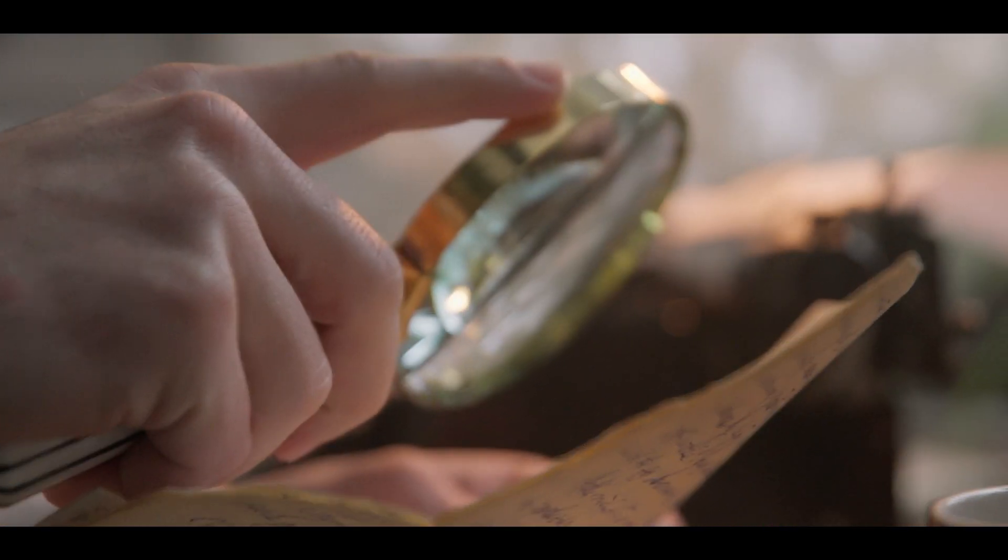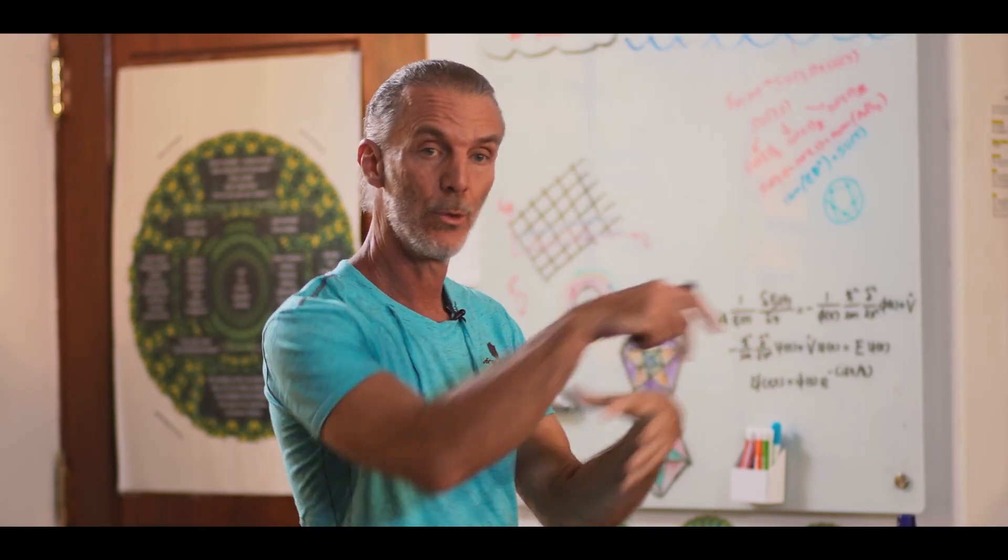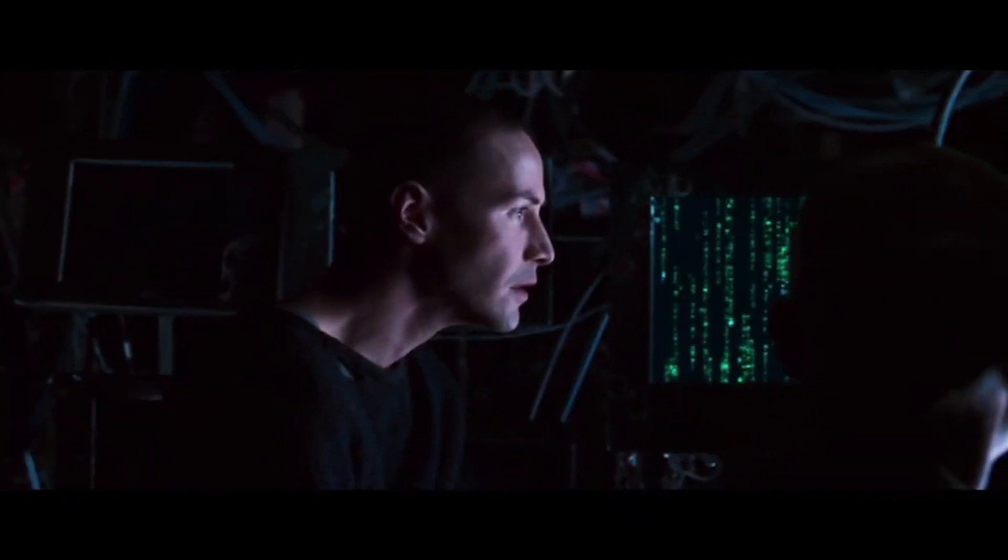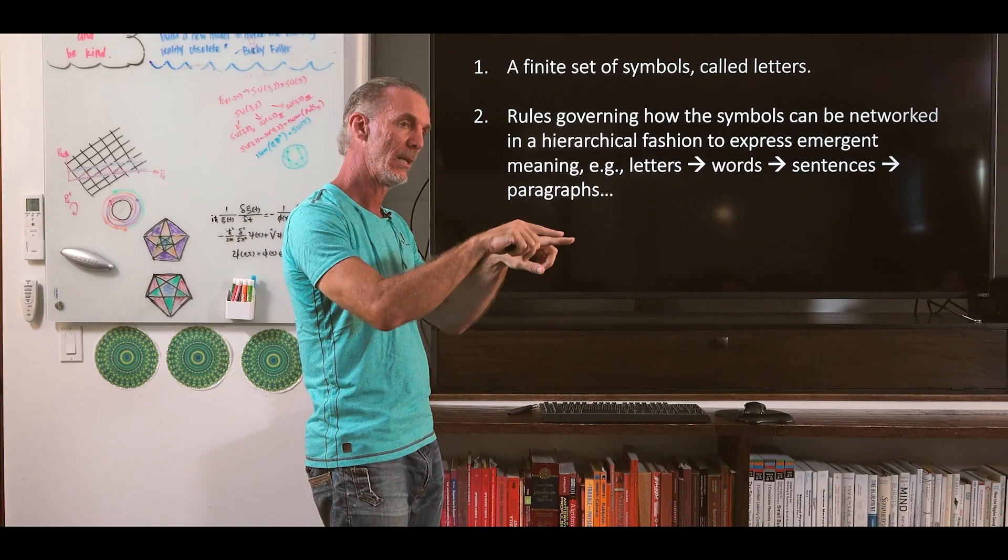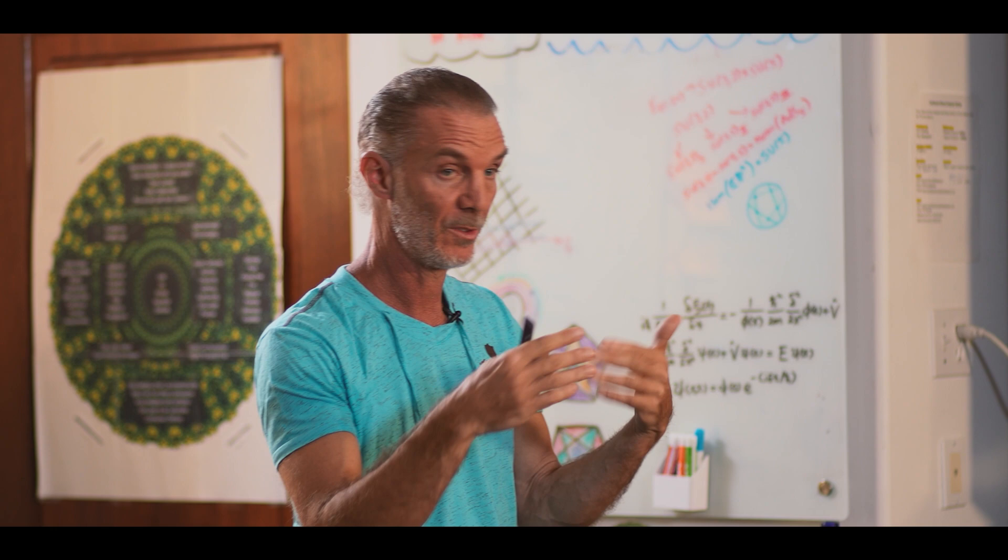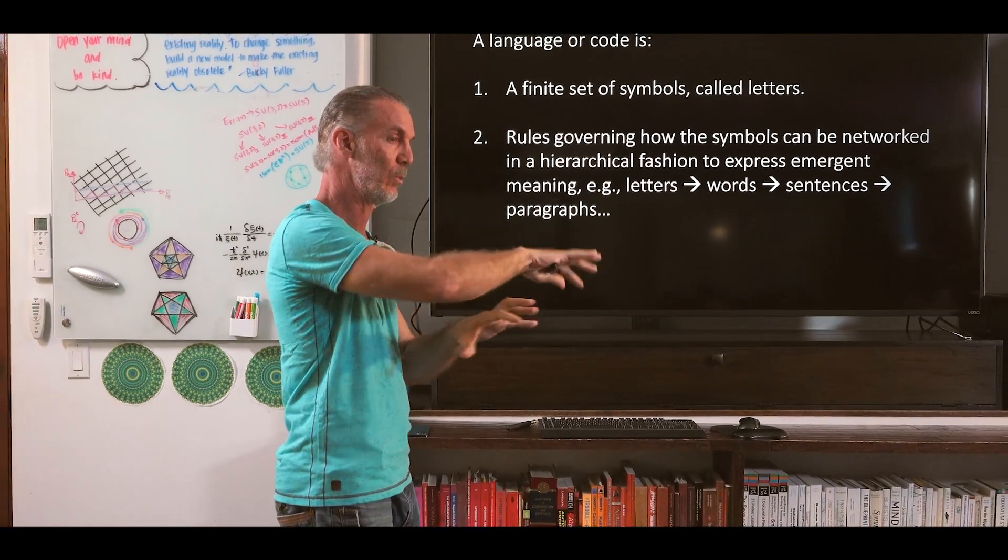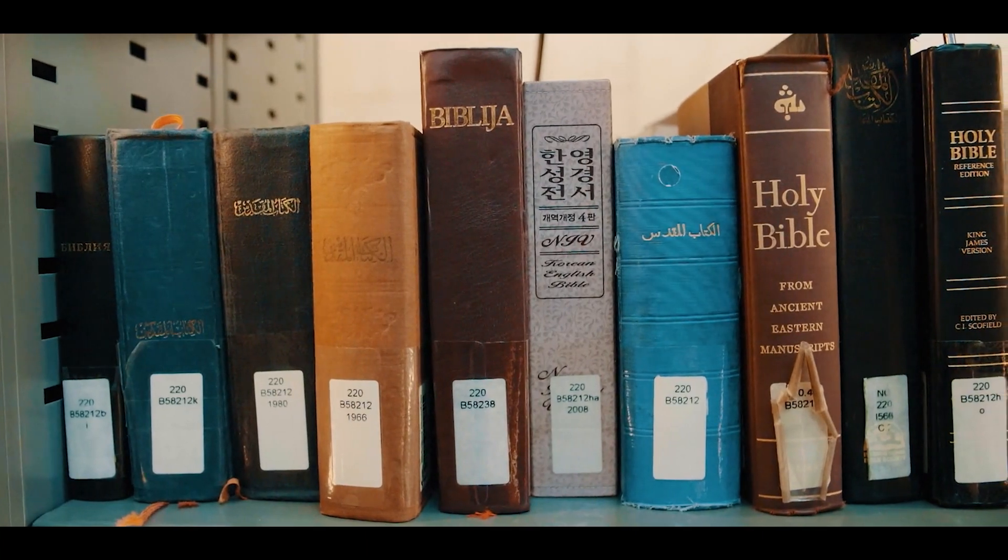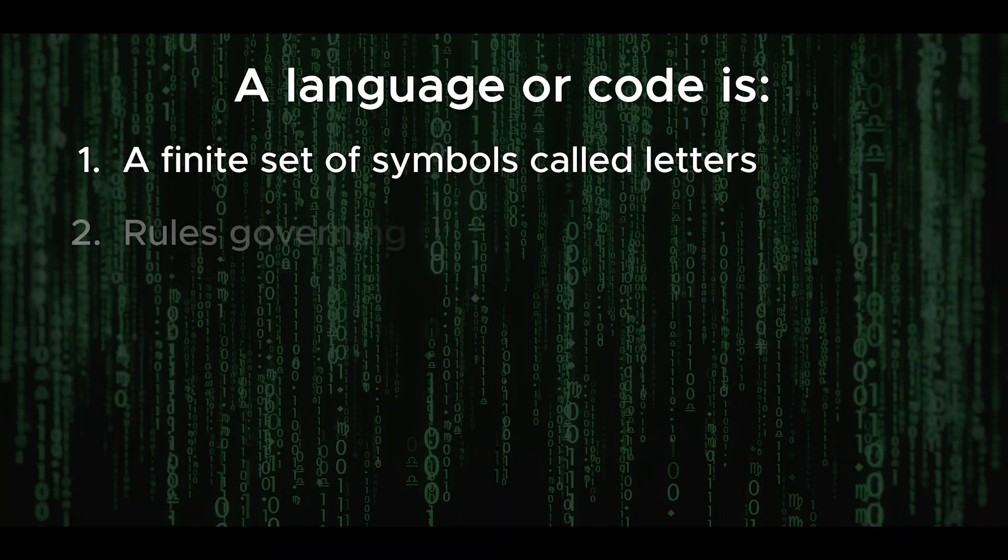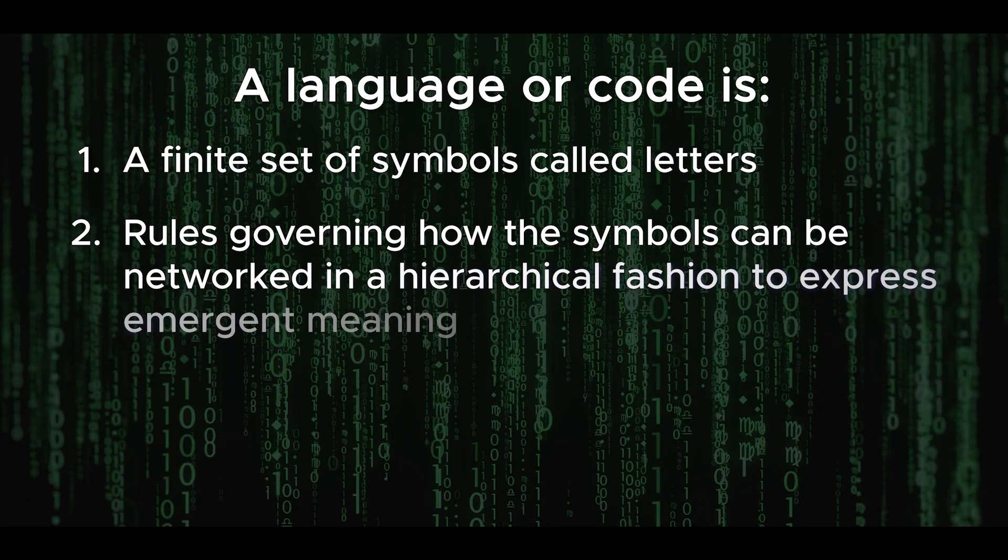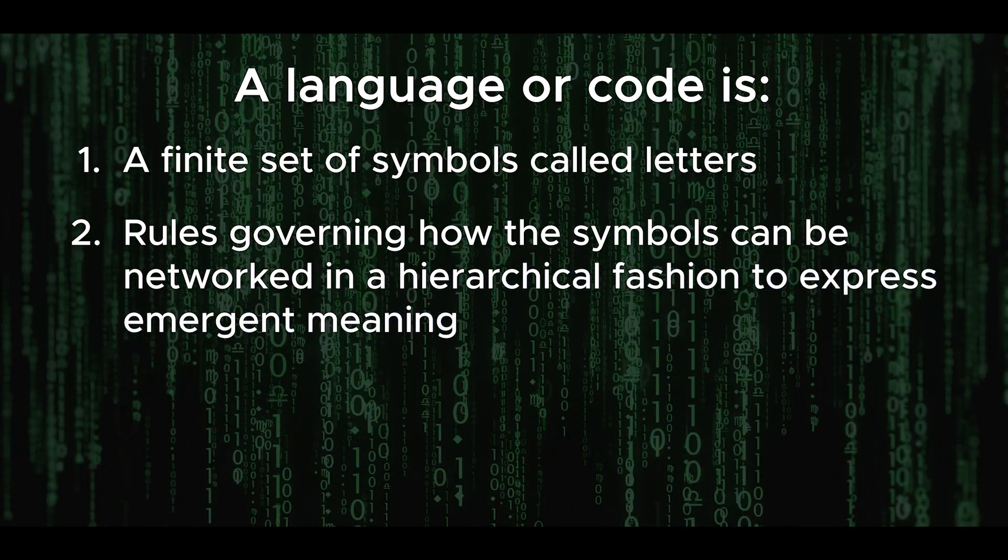And then there's rules in languages or codes on how you can arrange those objects, how the symbols can be networked. They don't have to be written in a line - some things do like C++ or English, but not all symbolic languages must be written in a line. So I call it a network. These rules govern how the symbols can be networked in a hierarchical fashion to express emergent meaning.